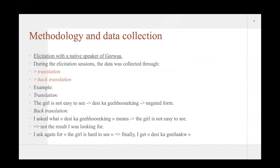For methodology and data collection, I collected my data through elicitation with a native speaker of Gorwaa, which is the lovely Hezekiah Cody. During the elicitation sessions, the data was collected through translation and back-translation. So, an example of this was when I was doing my elicitation, one of the very first things I had asked was, the girl is hard to see, but I had gotten the girl is not easy to see, which is dasi ka geho ikan, which is in a negated form, which is not what I had intended or was looking for. And so I decided to utilize back-translation, and I had asked Hezekiah what dasi ka geho ikan meant, which means the girl is not easy to see. Since this was not the result I was looking for, I kept pushing a bit more. I asked again for the girl is hard to see, and I finally had gotten dasi ka geho ikan. And so the elicitation went on in a similar manner as this.